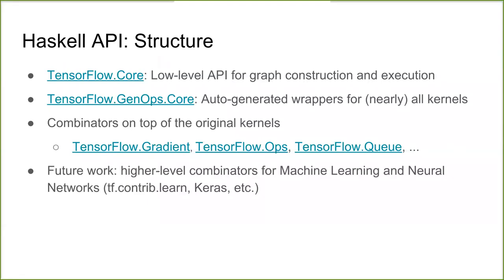In the future, we'd like to build more high-level abstractions. In Python TensorFlow, there are libraries like tf.contrib.learn or Keras that do optimization for you. Right now, you sort of have to write that by hand. You do get gradients, but you have to write the loop yourself — things like fixed step size gradient descent. A lot of what people think of as TensorFlow is actually the Python libraries on top of TensorFlow, which we now have to recreate.